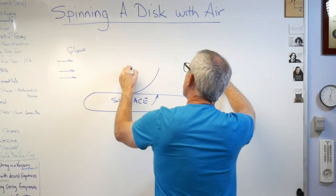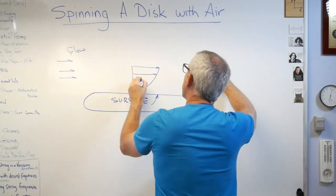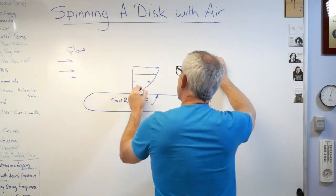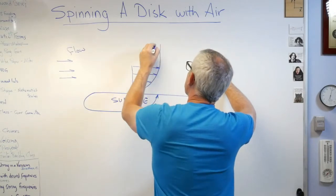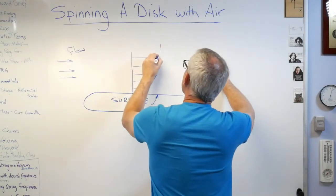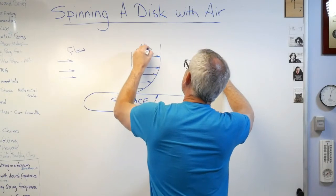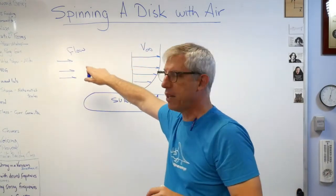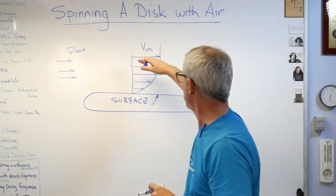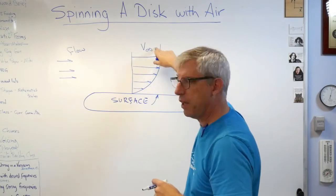Well there's this thing called a boundary layer. If I plot the velocity as you move up from the surface, the velocity profile looks kind of like that. It goes up like that. We'll call that V infinity. That's the free stream, that's this velocity here when you get far enough up from the surface.